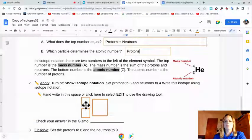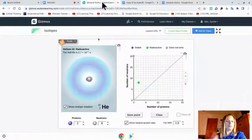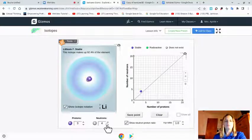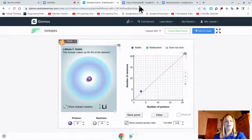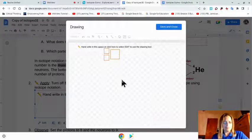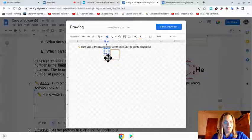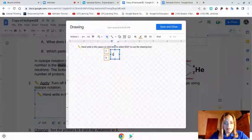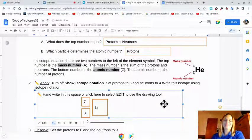Turn off show isotope notation? Let's not. We're going to set protons to 3 and neutrons to 4. That we will do. Protons to 3, neutrons to 4. So we have lithium-7. Cool. A 7 and a 3 and an L-I. Handwrite in this space or click to edit. Let's see if we can do this. I'm doing it. I mean, of course I am. I had faith. So it's easy. If I can do it, you can do it. Look at that.